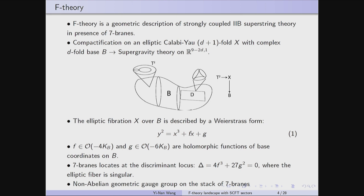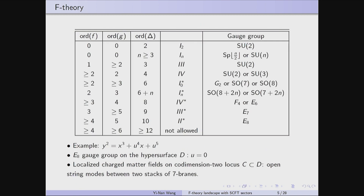The location of seven-branes is at the discriminant locus where delta vanishes, where the fiber is singular. Physically, the open-string modes attached to a stack of seven-branes give rise to non-abelian gauge theory in the lower-dimensional physical theory. The gauge group can be read out from a table using the orders of vanishing of f, g, and delta over codimension-one loci — you can get any Lie algebra in the A, B, C, D, E, F, G classification.